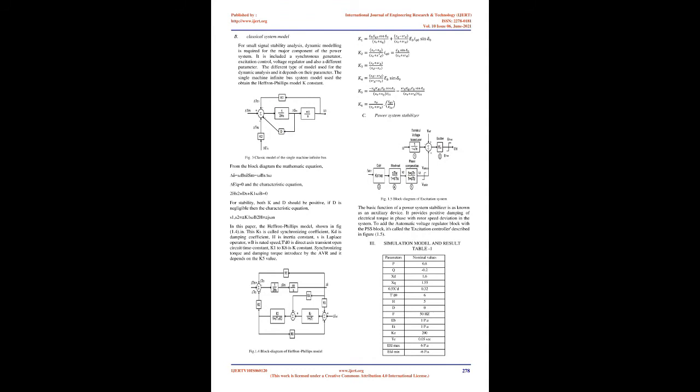Synchronizing torque and damping torque introduced by the AVR depend on the K5 value. Fig 1.4 block diagram of Heffron-Phillips model. Fig 1.5 block diagram of excitation system. The basic function of a power system stabilizer (PSS) is as an auxiliary device — it provides positive damping of electrical torque in phase with rotor speed deviation. Adding the automatic voltage regulator block with a PSS block is called the excitation controller, described in Figure 1.5.